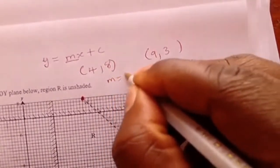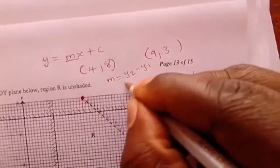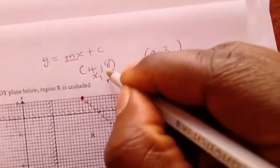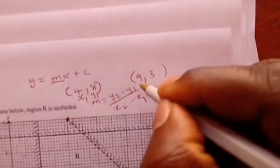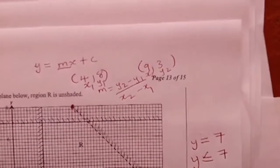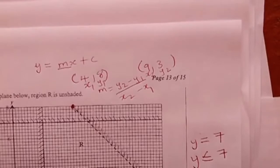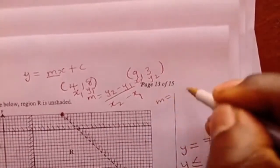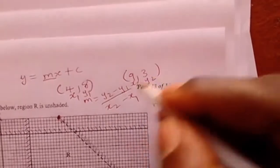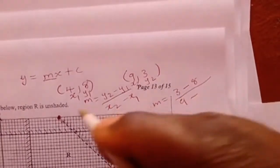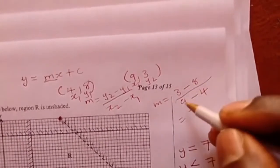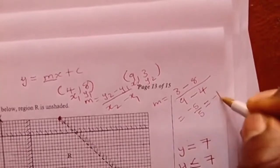m is equal to y2 minus y1 over x2 minus x1. Let x1 = 4 and y1 = 8, then x2 = 9 and y2 = 3. Substituting in the gradient formula: m equals 3 minus 8 over 9 minus 4. 3 minus 8 gives minus 5, then 9 minus 4 gives 5, giving you negative 1 as your gradient.